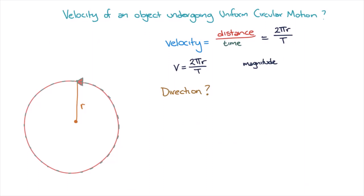Let's consider the velocity at different points along the path of motion. On the top of the circle, the object is moving left, so the velocity vector must point left. At the bottom of the circle, the object must be pointing right. On the left side of the circle, the object is moving downwards, so the velocity vector must point down. We can see that at every point on this circle, the velocity is pointing tangentially to the circle.